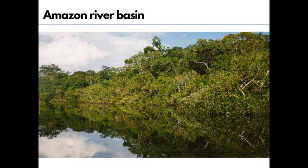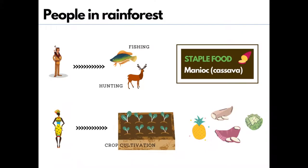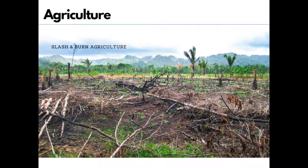Let's see about the lifestyle of people who live in these forests. Men go for fishing and hunting, whereas women grow crops. They mainly cultivate tapioca, pineapple, and sweet potato. As hunting and fishing are uncertain, women are the ones who keep the family alive with the vegetables they grow. The staple food — the food they eat on a regular basis — is manioc, also called cassava. It is a root vegetable like potato and is rich in starch.